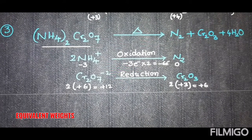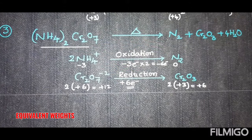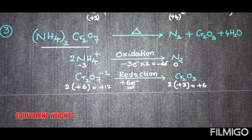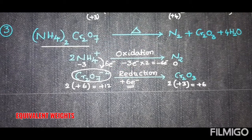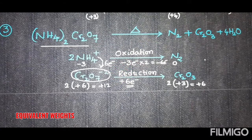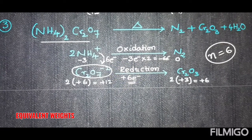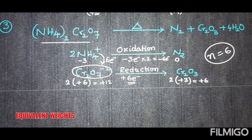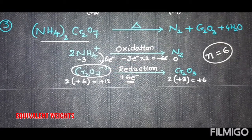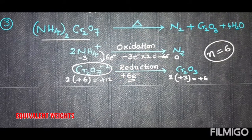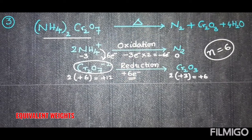For Cr₂O₇²⁻, chromium's oxidation state is +6; in Cr₂O₃ it is +3. There are two chromiums, so: 2×(+6) = +12 and 2×(+3) = +6, a difference of six electrons. This is reduction. The Cr₂O₇²⁻ accepts six electrons from the NH₄⁺. Unlike the previous case where both parts were oxidized (requiring addition), here one part is oxidized and one is reduced, so the electrons transfer from one to the other — n-factor is six only.